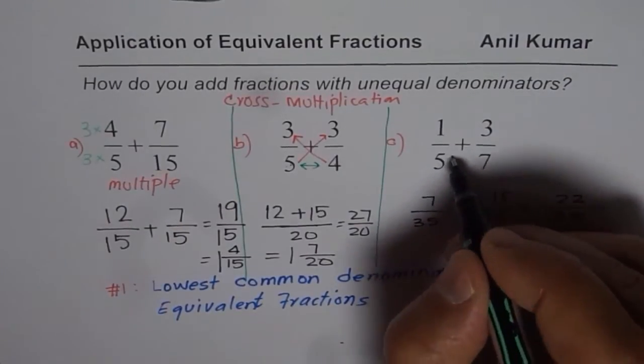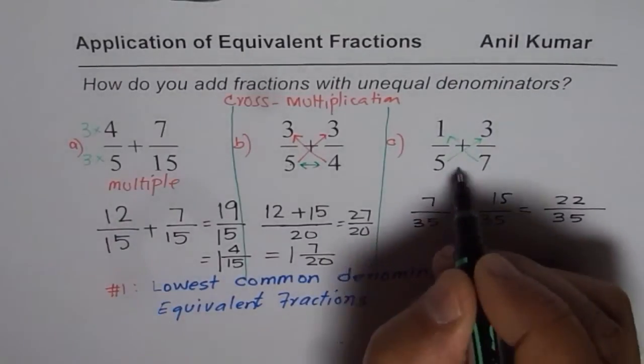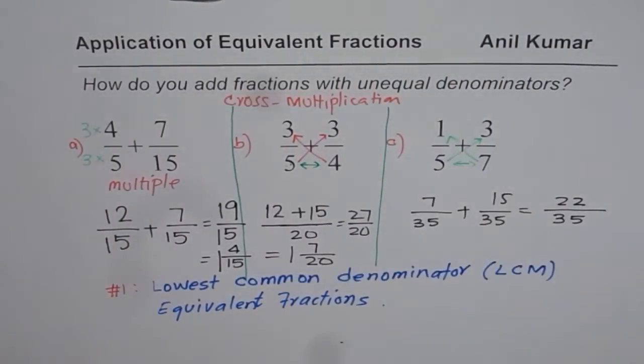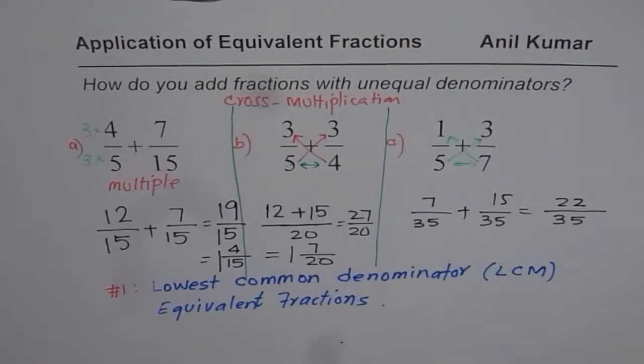I hope you understand and appreciate this cross multiplication. Denominator is when these two gets multiplied. So that is how we can always add fractions, even if they have unequal denominator. Preferred strategy is cross multiplication when it is difficult to find common denominators otherwise. I hope that helps. I'm Anil Kumar. You can subscribe and learn a lot from my videos. Thank you and all the best.